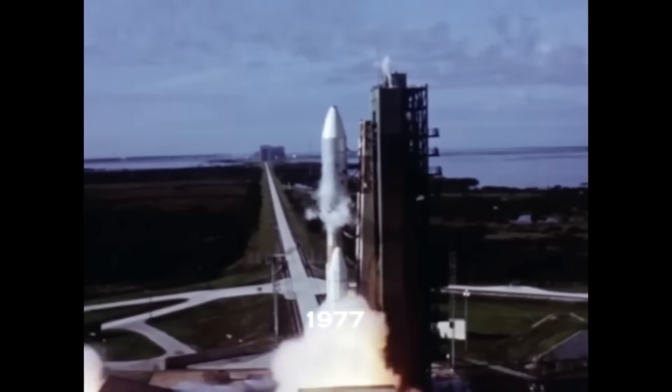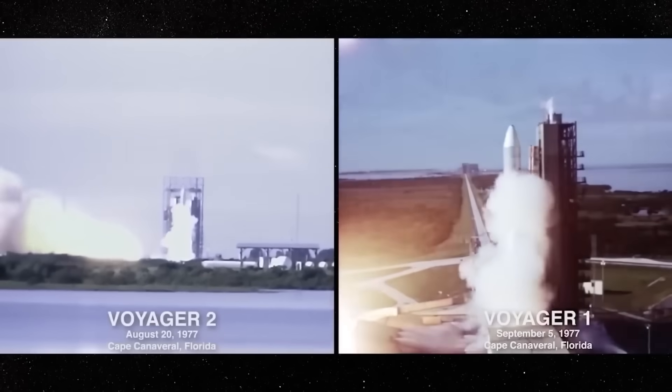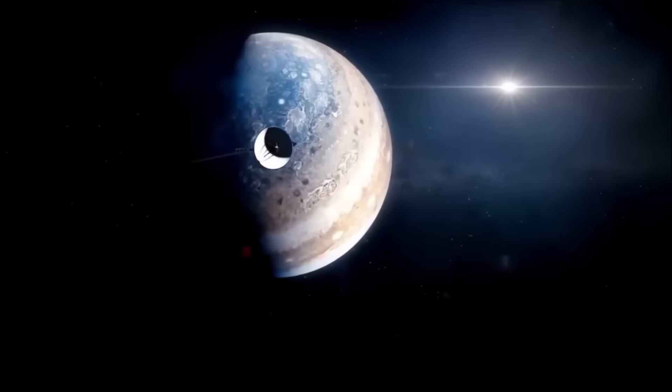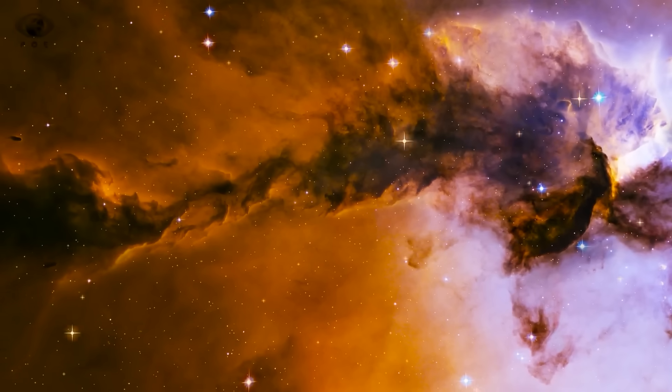Launched in 1977, Voyager 1 was designed for a mission that would last just four years. Its task was simple: observe Jupiter and Saturn, send back data, and fade quietly into deep space. But what happened next defied all expectations.